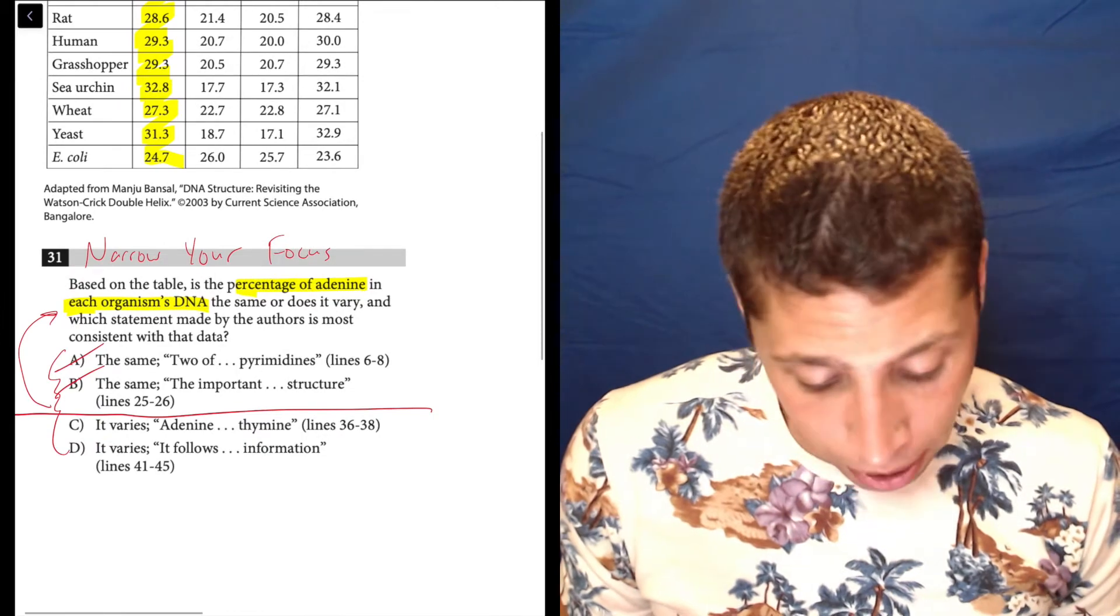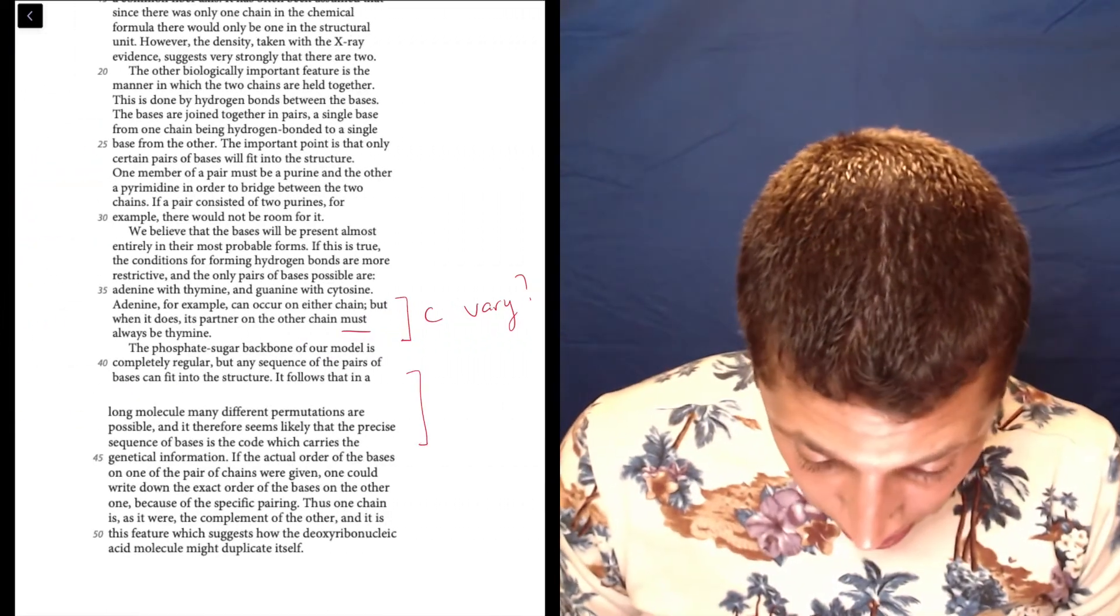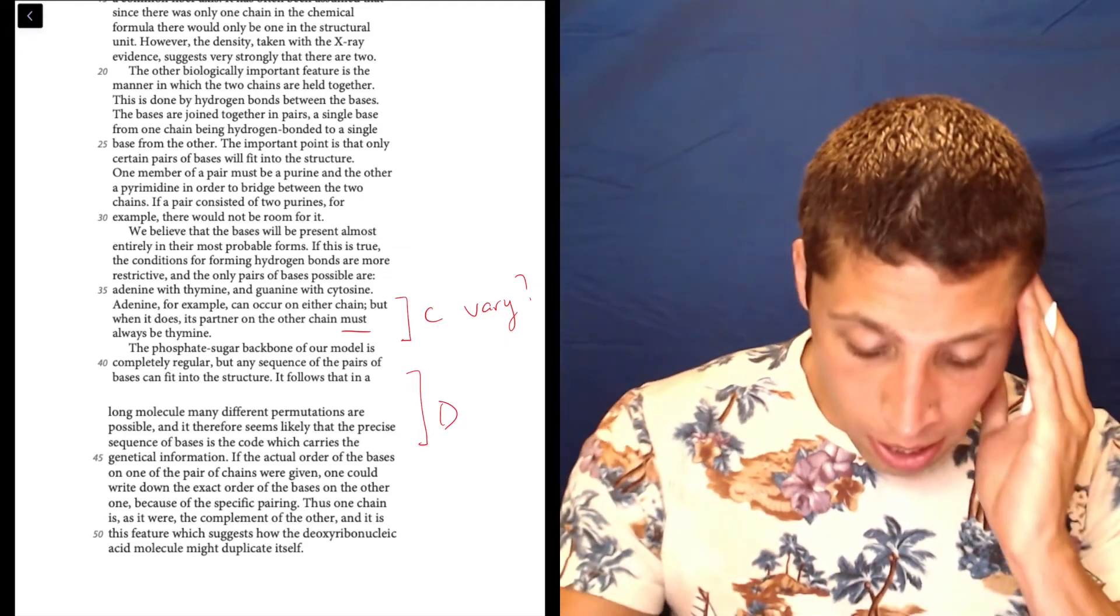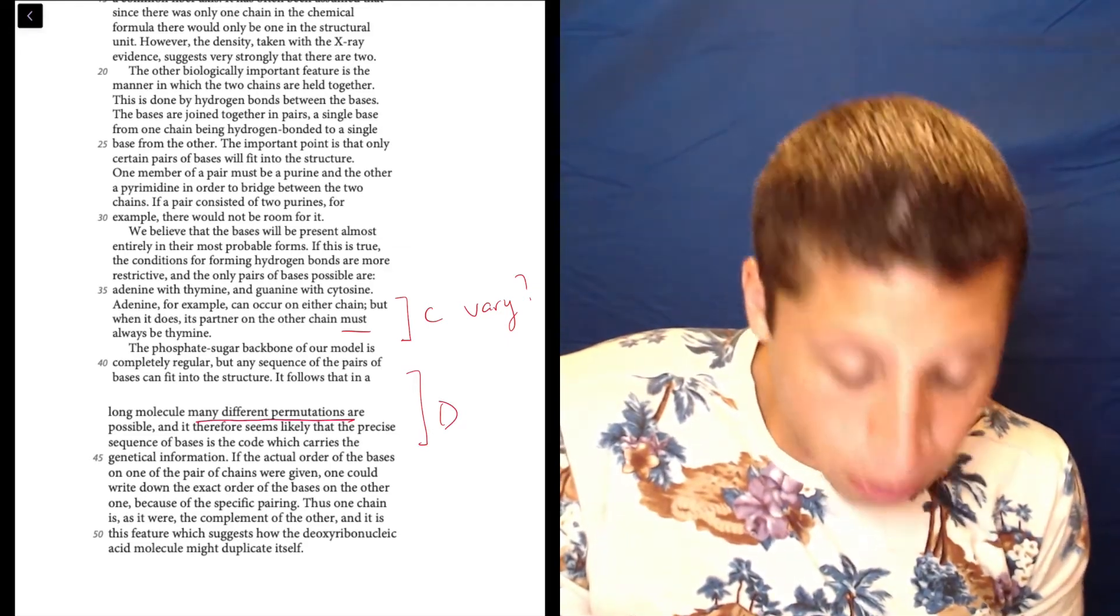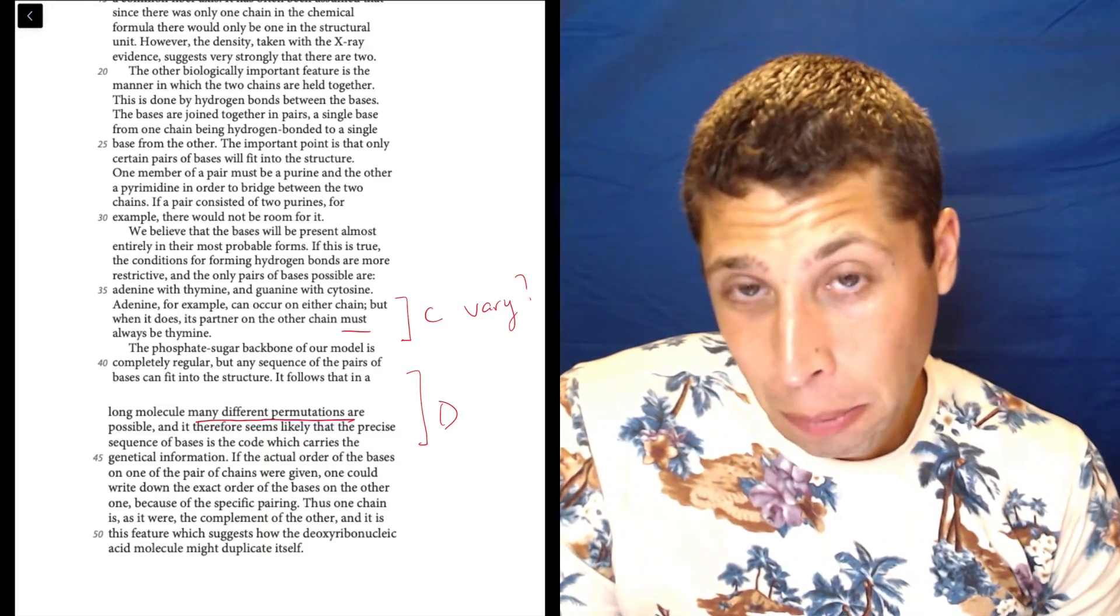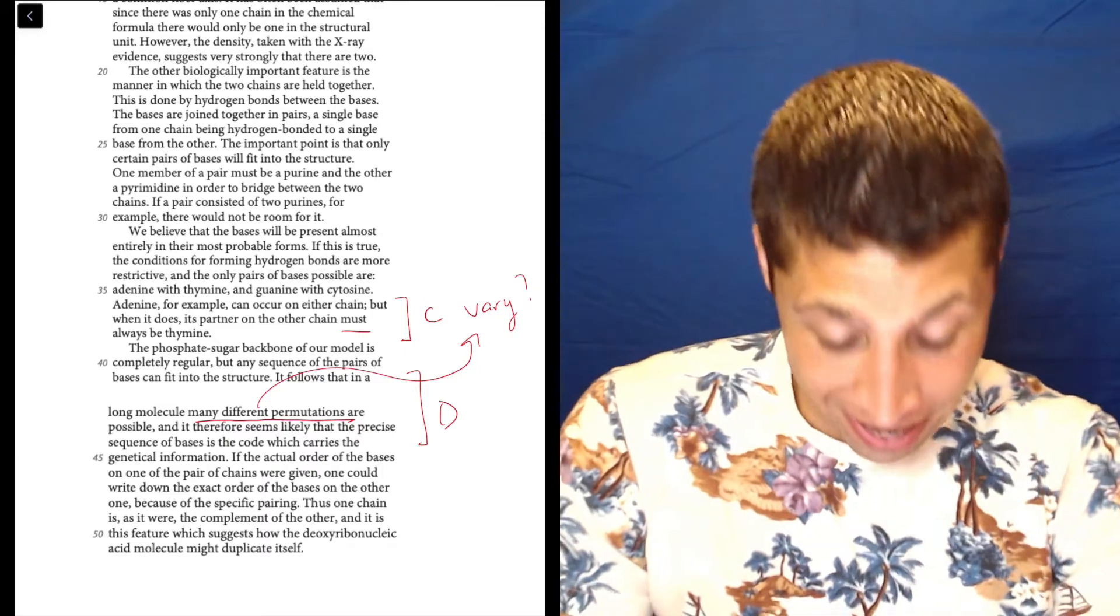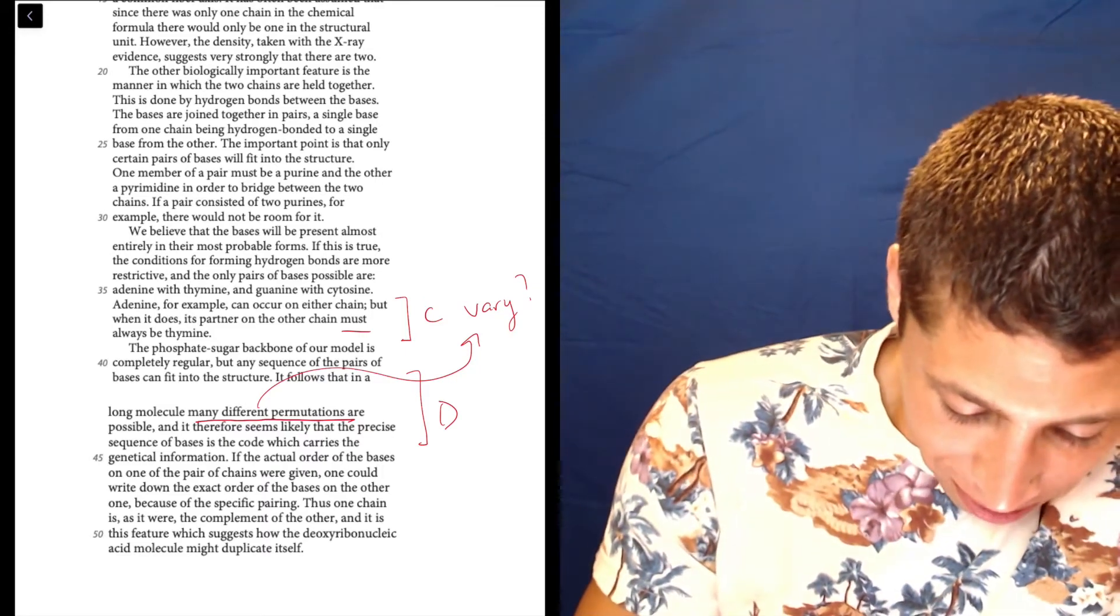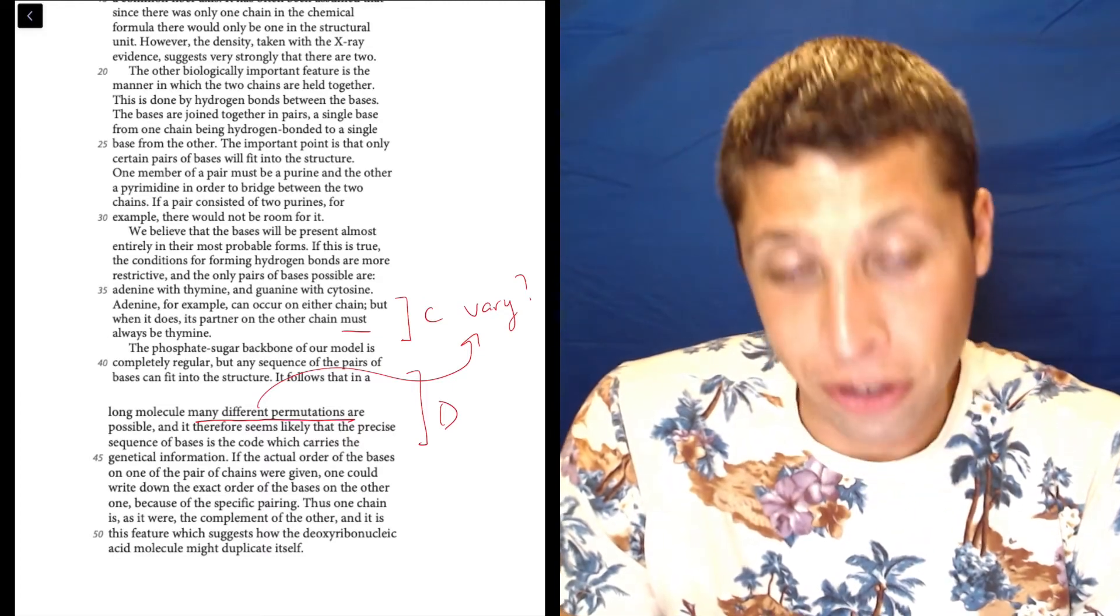Let's see if I need to understand it better. Let's go to 41 to 45, see if that's going to help us out more. That's here. It follows that in a long molecule, many different permutations. So even if you don't know the word permutation, you know the word different. Different means to vary. They're possible and it therefore seems likely that the precise sequence of bases is the code which carries the genetical information.